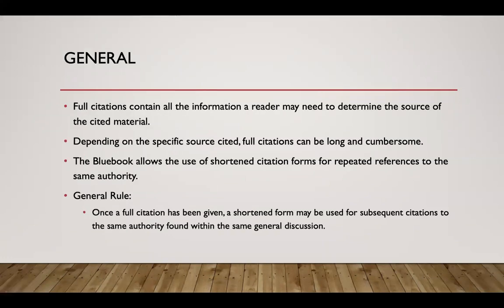Short form in general. Full citations contain all the information a reader may need to determine the source of the cited material. Depending on the specific source cited, full citations can be long and cumbersome. The Bluebook allows the use of shortened citation forms for repeated references to the same authority. The general rule is: once a full citation has been given, a shortened form may be used for subsequent citations to the same authority found within the same general discussion.